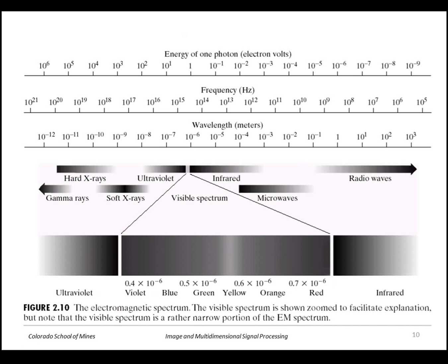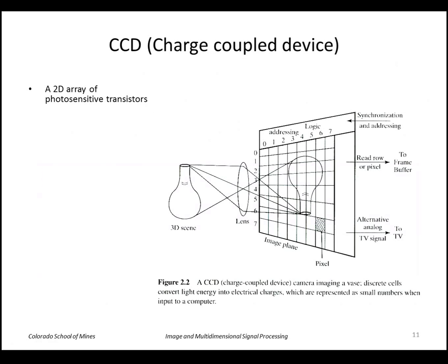The visible spectrum is actually a very small portion of the entire electromagnetic spectrum, ranging from about 0.4 micrometers to about 0.8 micrometers. Now let's look at cameras.